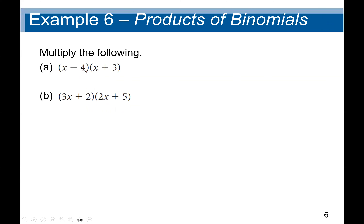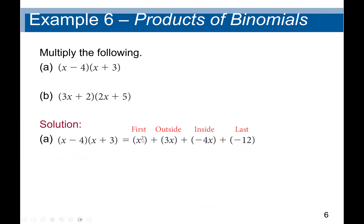Let's try some examples using the FOIL method — First, Outside, Inside, Last. For (x minus 4)(x plus 3): First gives x times x equals x squared. Outside gives x times 3 equals 3x. Inside gives negative 4 times x equals negative 4x. Last gives negative 4 times positive 3 equals negative 12. Combining 3x minus 4x gives minus x. So the final answer is x squared minus x minus 12.